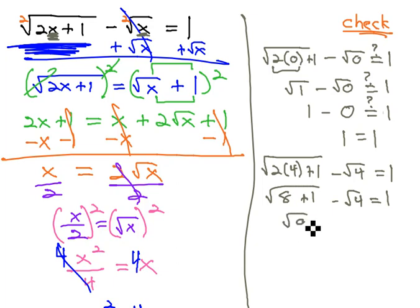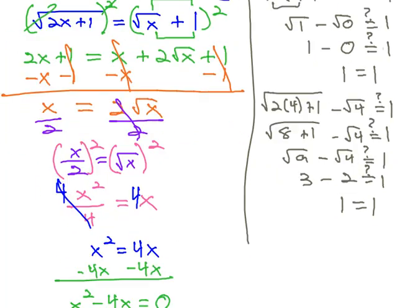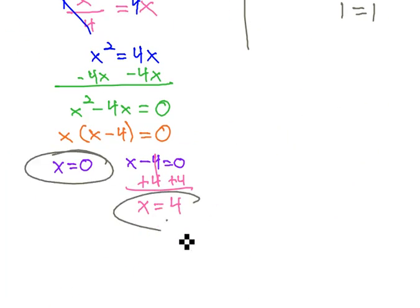The square root of 9 minus the square root of 4. The square root of 9 is 3, minus the square root of 4 is 2. And sure enough, 3 minus 2 equals 1. So, in this case, no extraneous solution, both 0 and 4 work for our final solution.